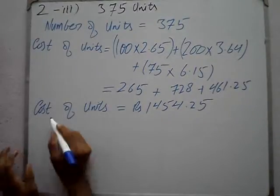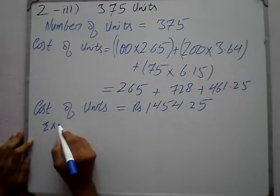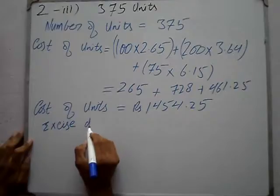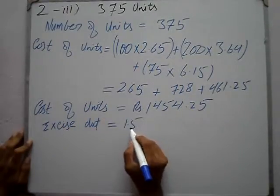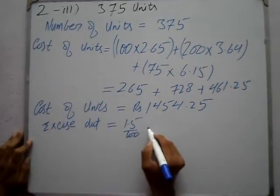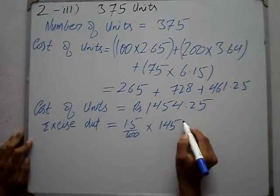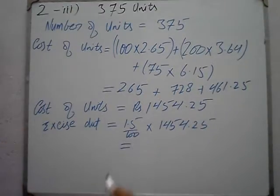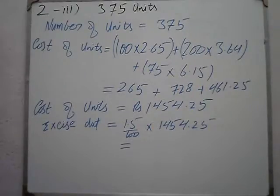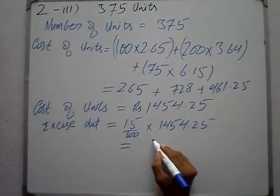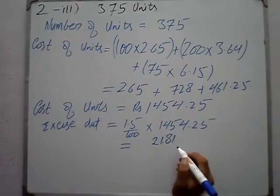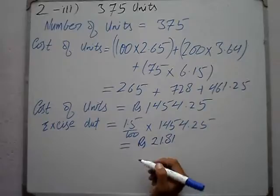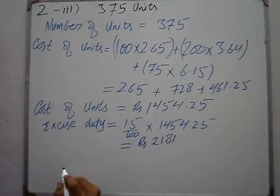50 plus 5 percent — size duty (excise duty) jo ke hai 1.5 percent. Multiply: 1.5 into 1454.25 divided by 100. This gives us 21.81. Excise duty = Rs 21.81.